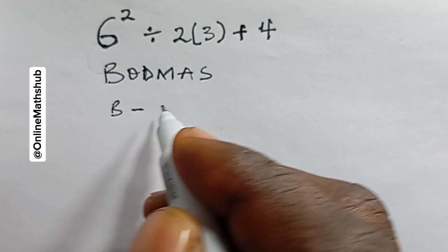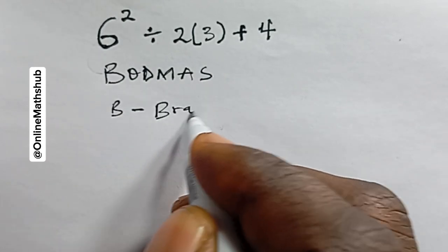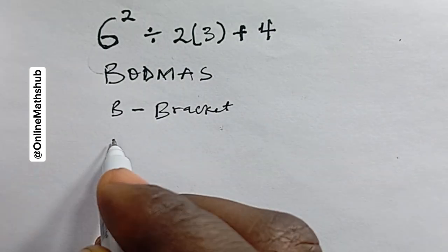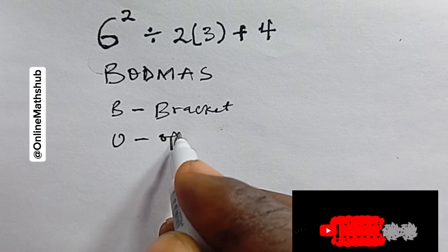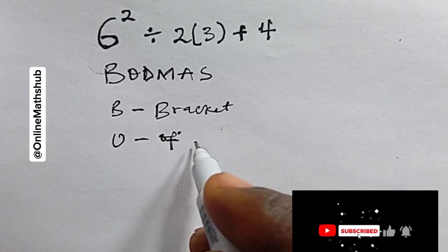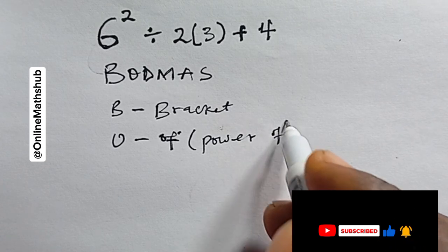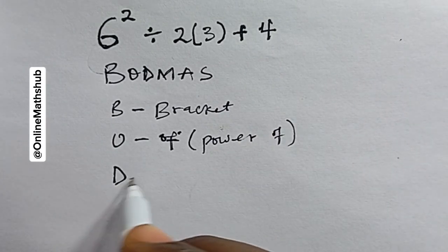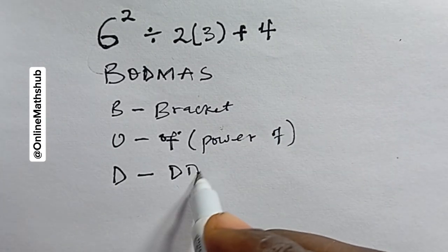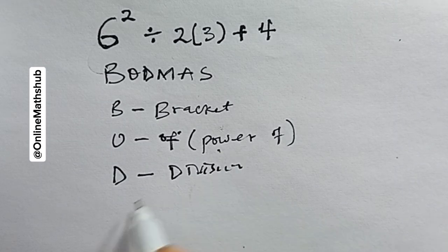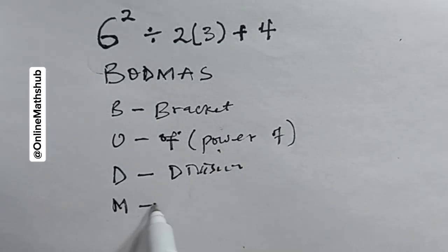B here represents Bracket, O means 'of', which can also mean 'power of', and D means Division.